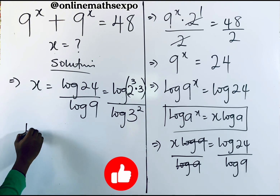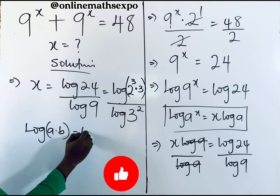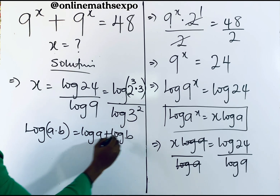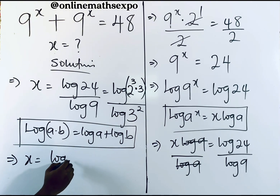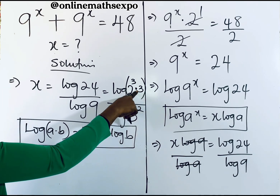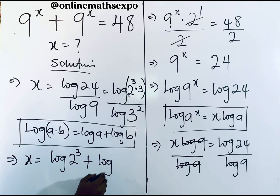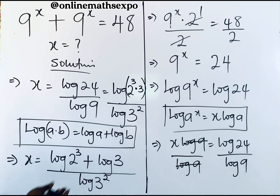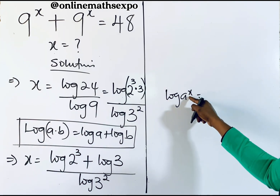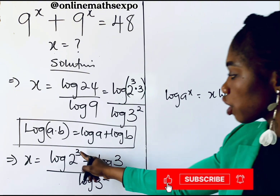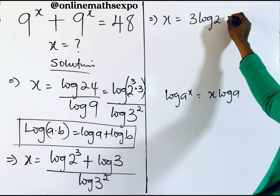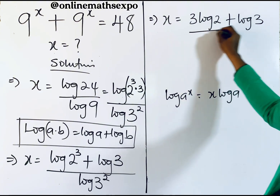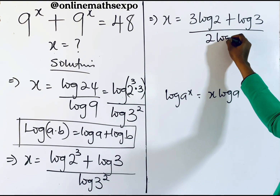Remember that for every log of a multiplied by b, it is log of a plus log of b. Applying this, we have x equal to log of 2 to the power of 3 plus log of 3, all divided by log of 3 squared. Bringing the powers down, this gives us 3 log 2 plus log 3 divided by 2 log 3.